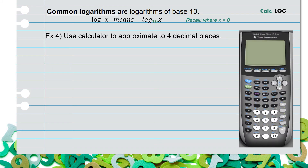Example 4: use the calculator to approximate to 4 decimal places. For part a, we're being asked to find log of 21. Notice there is no base, which means we can use the calculator. Click log, type in 21, click enter, and your calculator gives you the long value. Round to 4 decimal places — you should find it to be 1.3222.